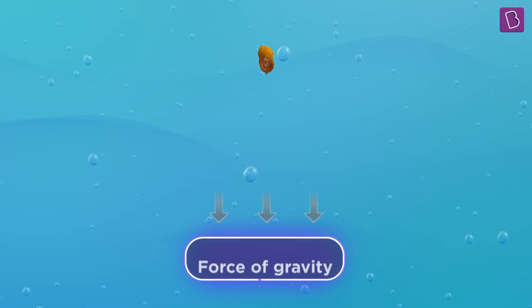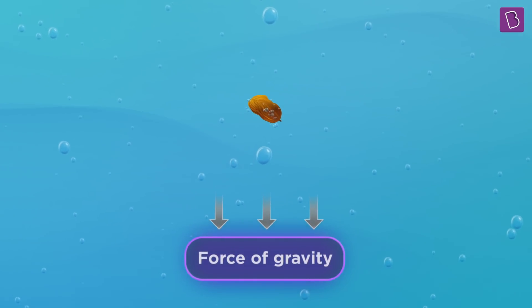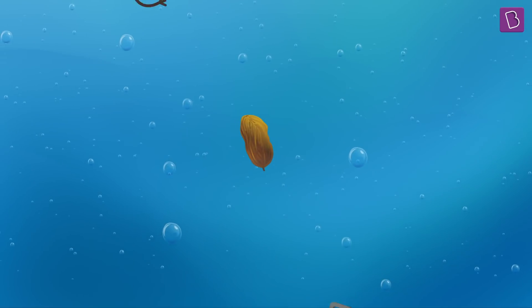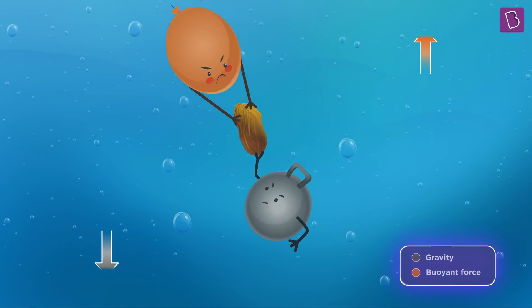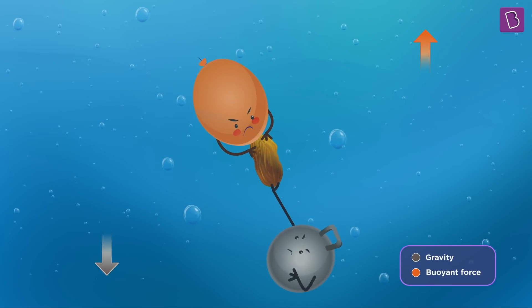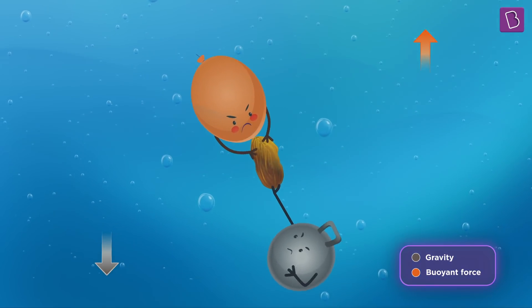Why does the raisin sink in water then? Well, because buoyant force is not the only force acting on it. The force of gravity pulls the raisin downwards. So sinking versus rising is a fight between upward buoyant force and the downward force of gravity.